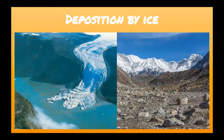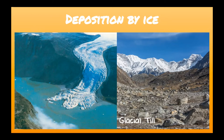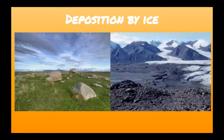Next is deposition by ice. Glaciers covered and moved over much of our continent, creating different landforms. As glaciers traveled across the land and then melted, they left behind rocks, soil, and other material called glacial till. Eventually that glacial till was dropped, leaving soil and rock behind. Glaciers also formed glacial plains — rocks left behind during the ice age are now covered with plants and grass.